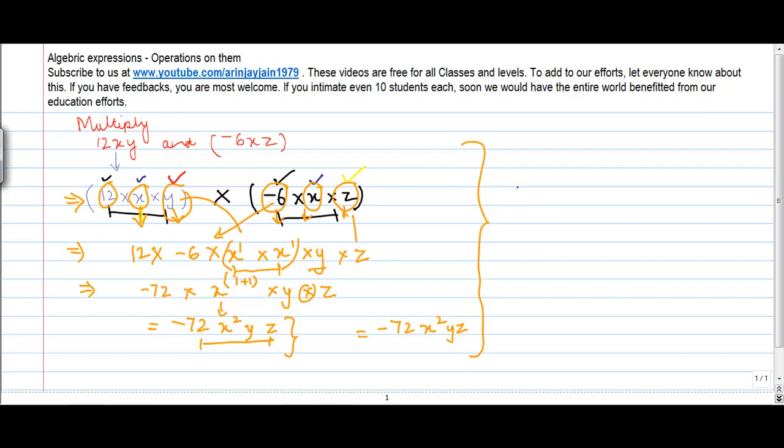Again, let me just recapitulate the steps for you so that whenever you look at it in the future, it's easier for you. So the first thing is arrange all elements in groups. So you have groups of numbers, you have groups of variables, let's say x, y, z.